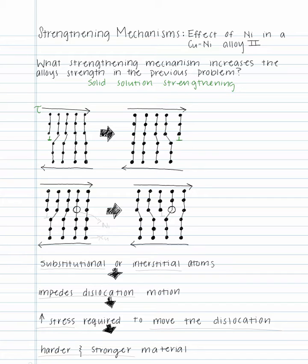A stress field in the lattice is created around the substitutional atom that can impede the motion of a dislocation, requiring more stress to deform the metal, therefore making the material stronger.